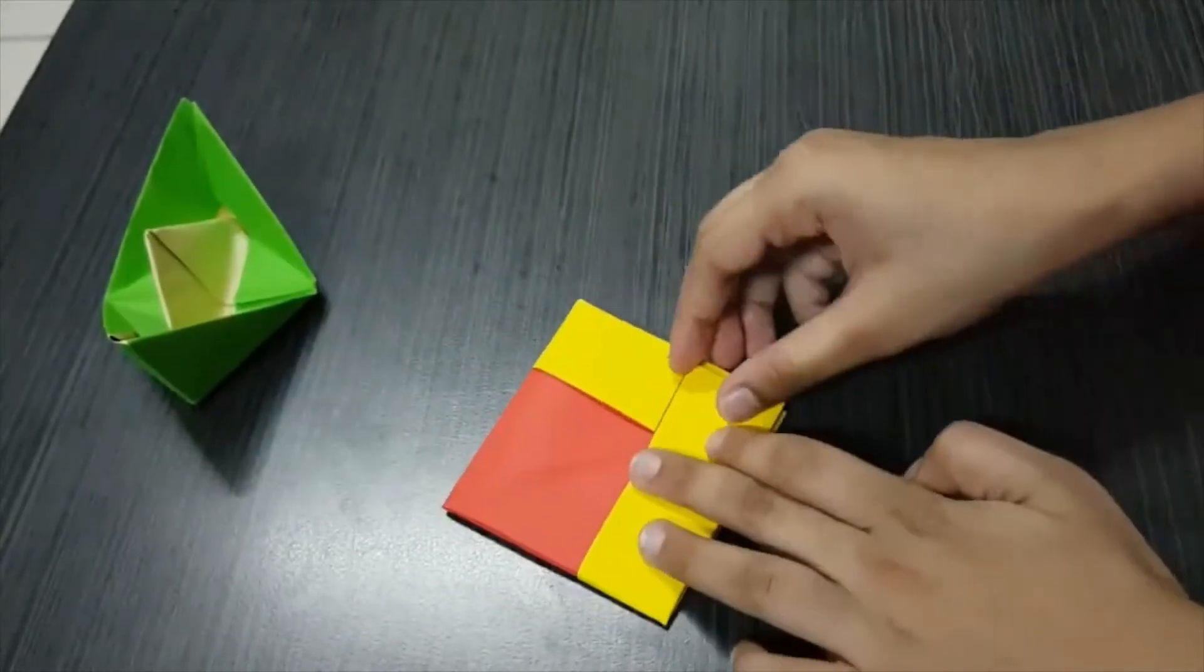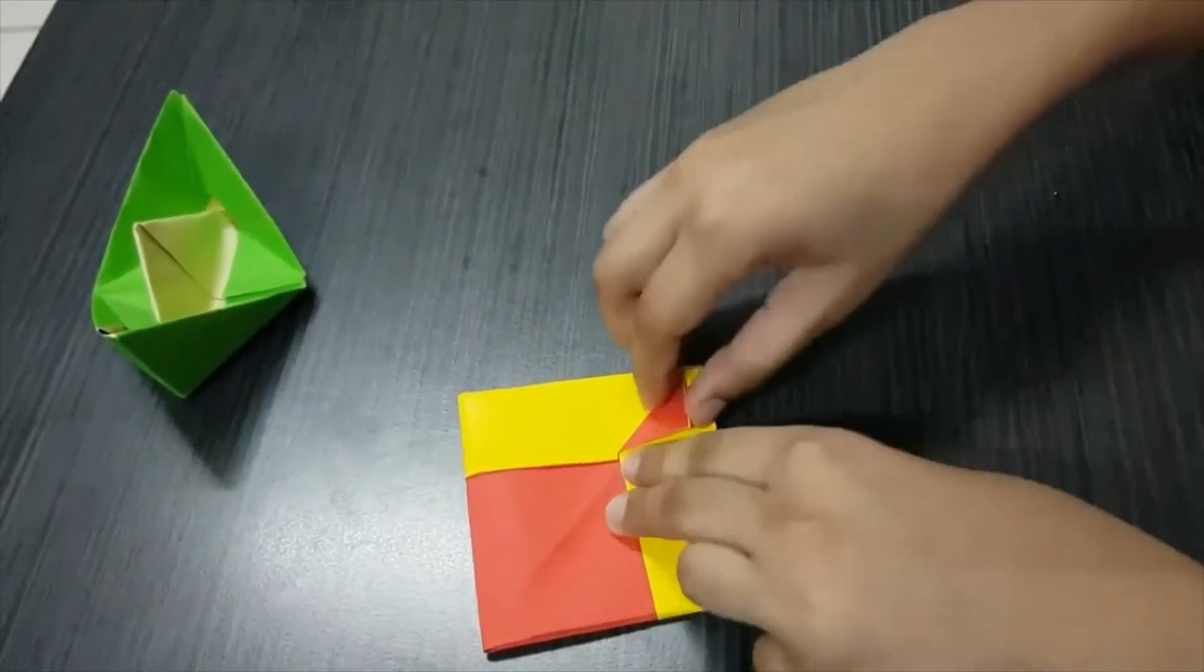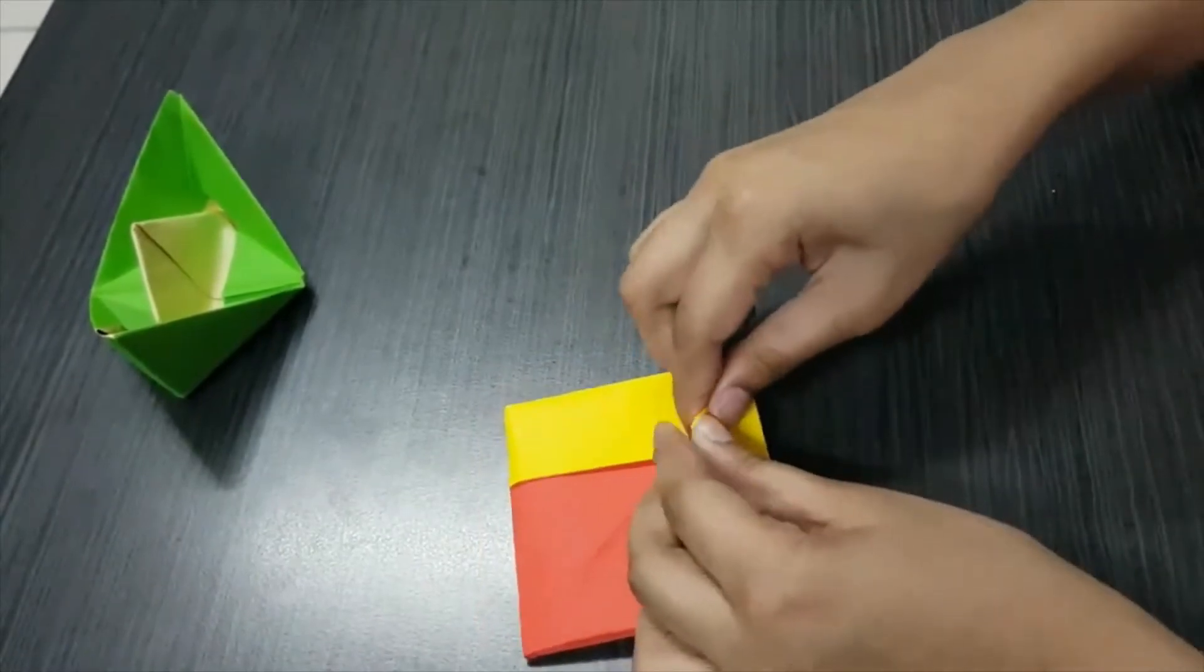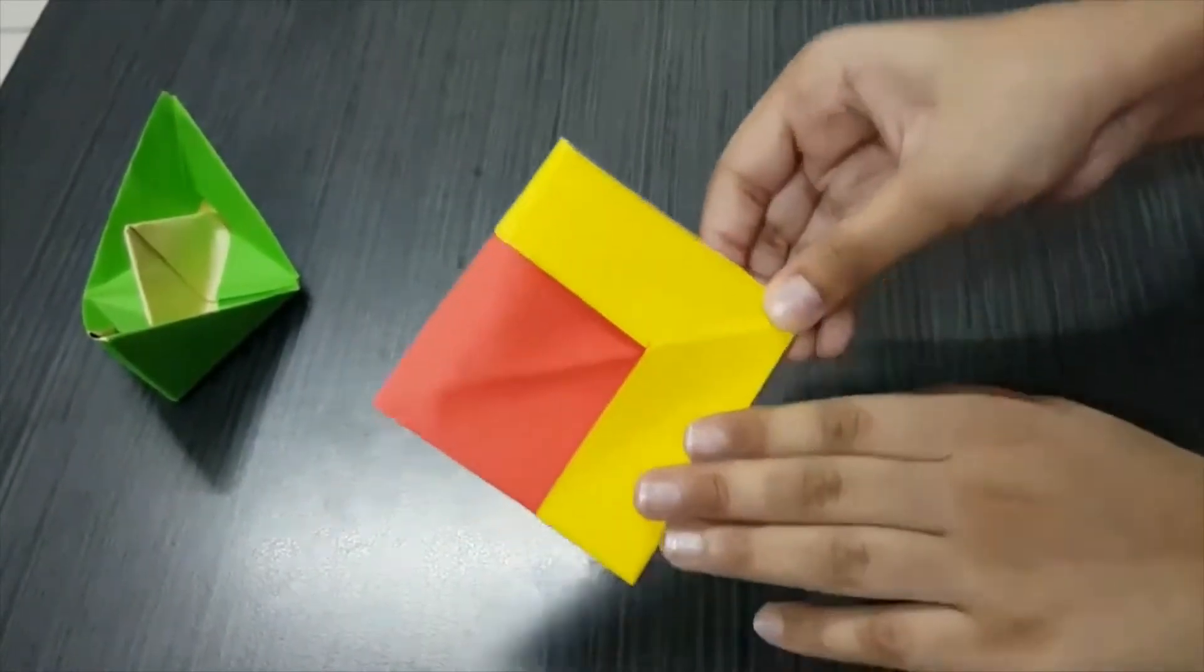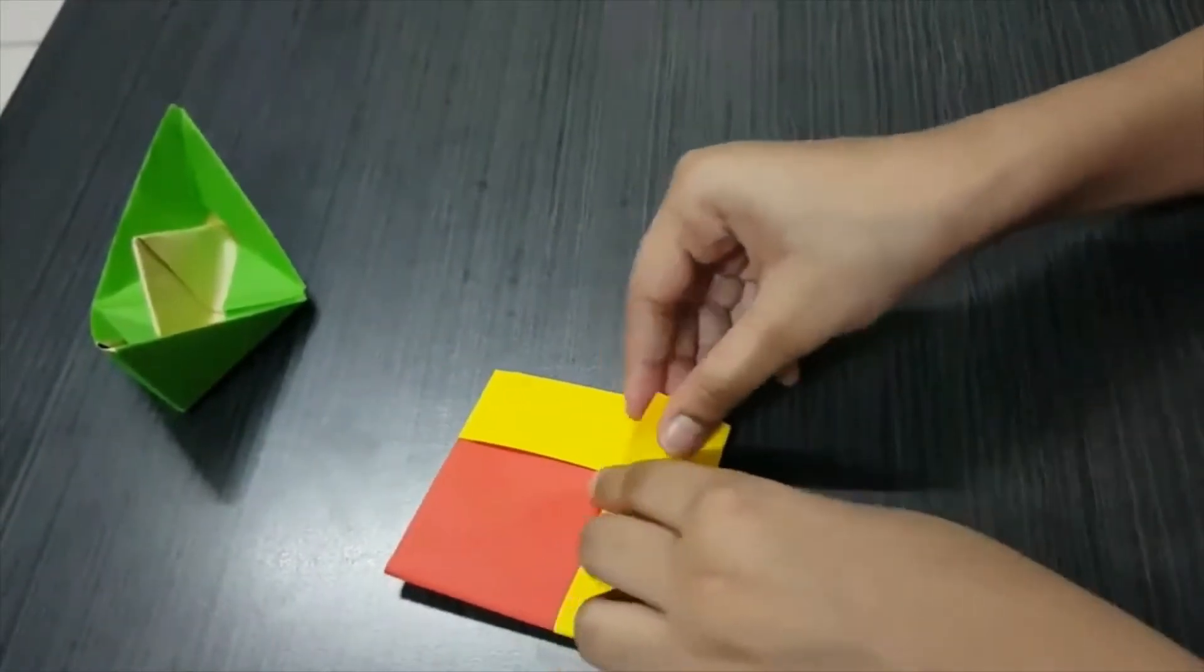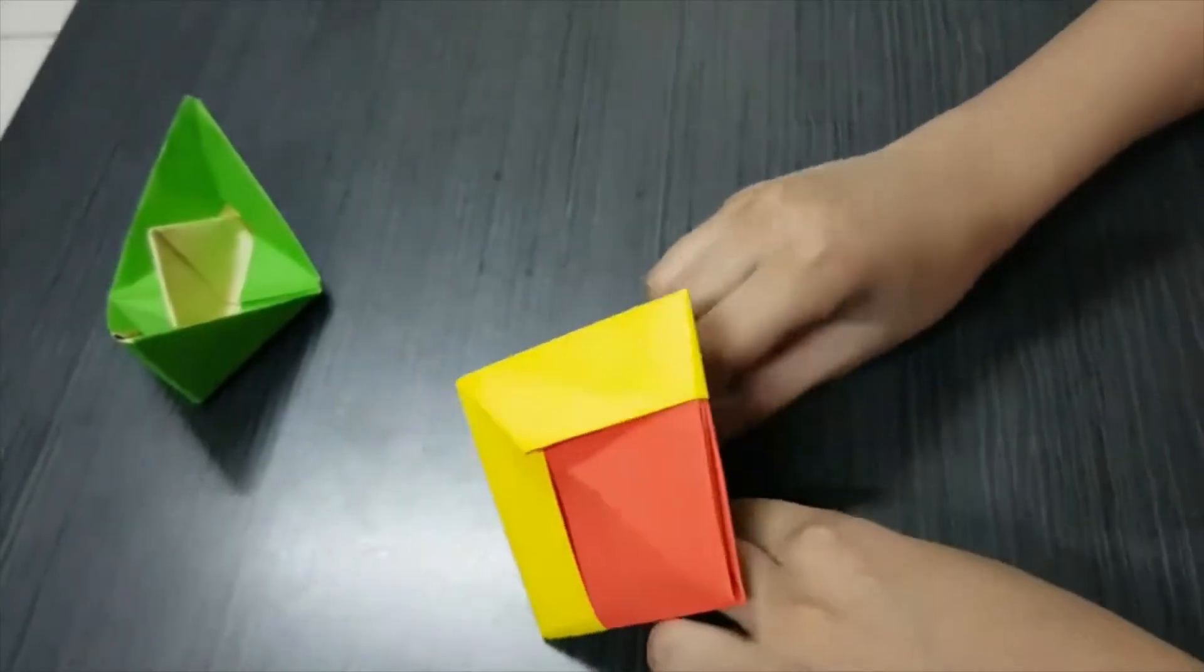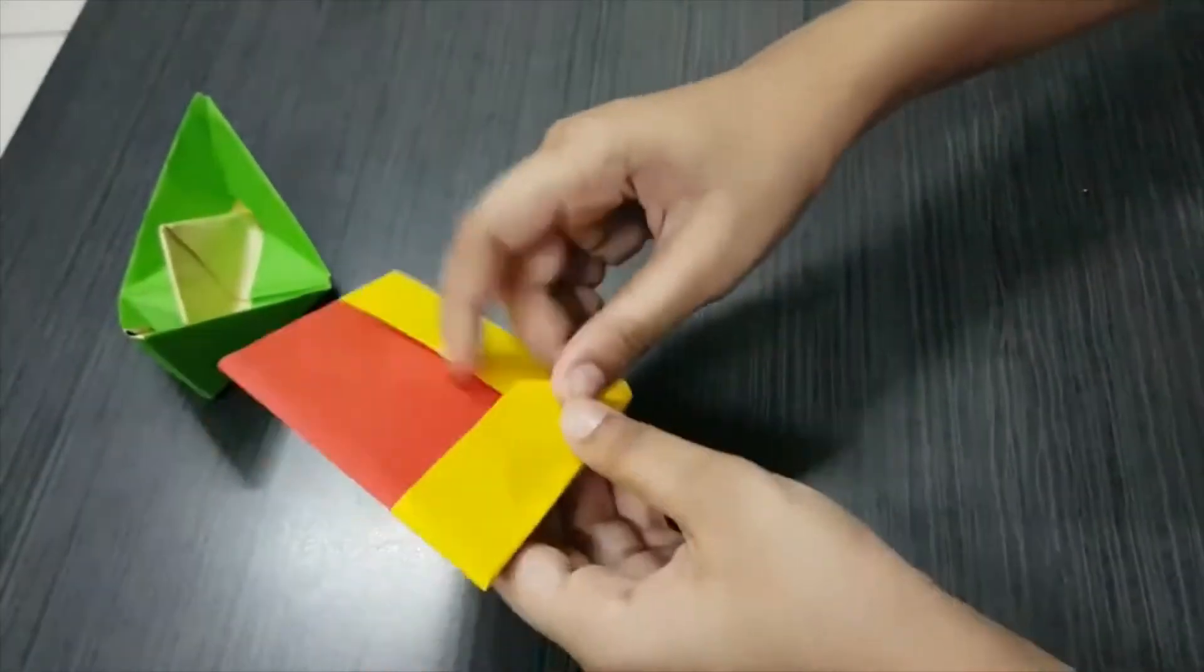Now the next thing you need to do is from here fold a small triangle and put it inside, just like that. And then do the same from the other side, and we fold it inwards.